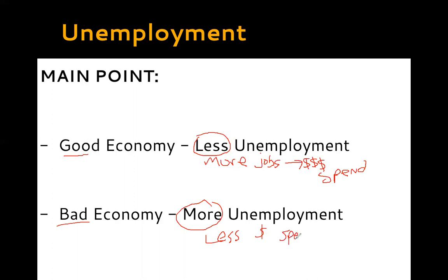People without jobs don't have regular paychecks, which is why they can apply for unemployment benefits from the government — to keep some money in their pockets and keep the economy moving. The stimulus bill right now serves the same purpose: keeping money in people's pockets so the economy doesn't slow down as much as it could.